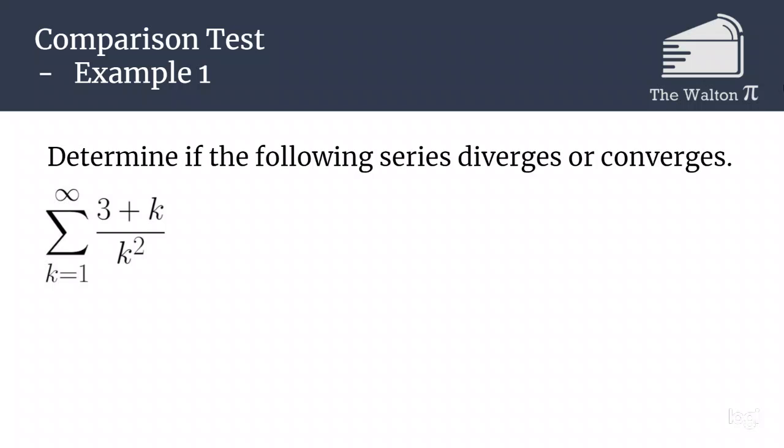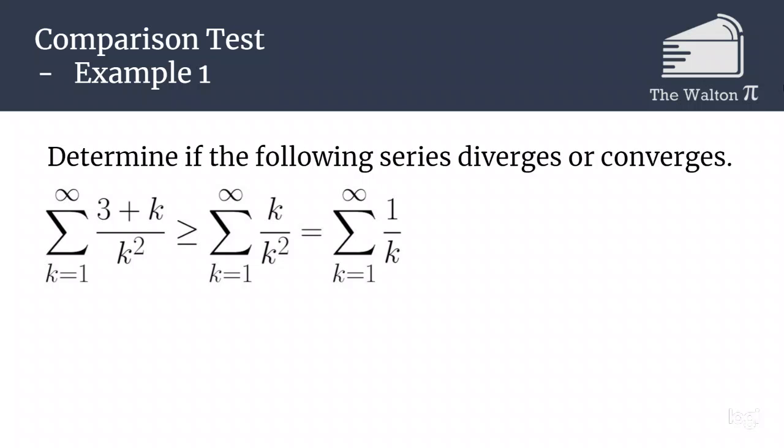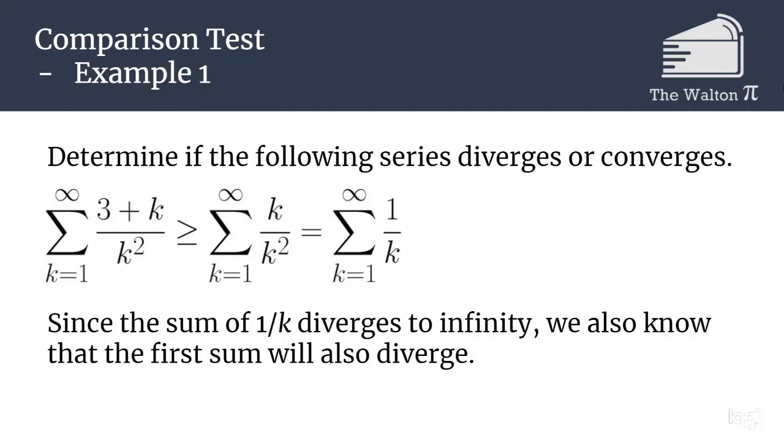Let's try to determine if the following series will diverge or converge: the sum from k equals 1 to infinity of (3 + k) over k squared. This is greater than or equal to the sum from k equals 1 to infinity of k over k squared, because removing 3 from the numerator makes every fraction smaller. Now k over k squared is the same as 1 over k, and the sum from k equals 1 to infinity of 1 over k is the harmonic series, which diverges. So since the sum of 1 over k diverges, the sum of (3 + k) over k squared must also diverge.